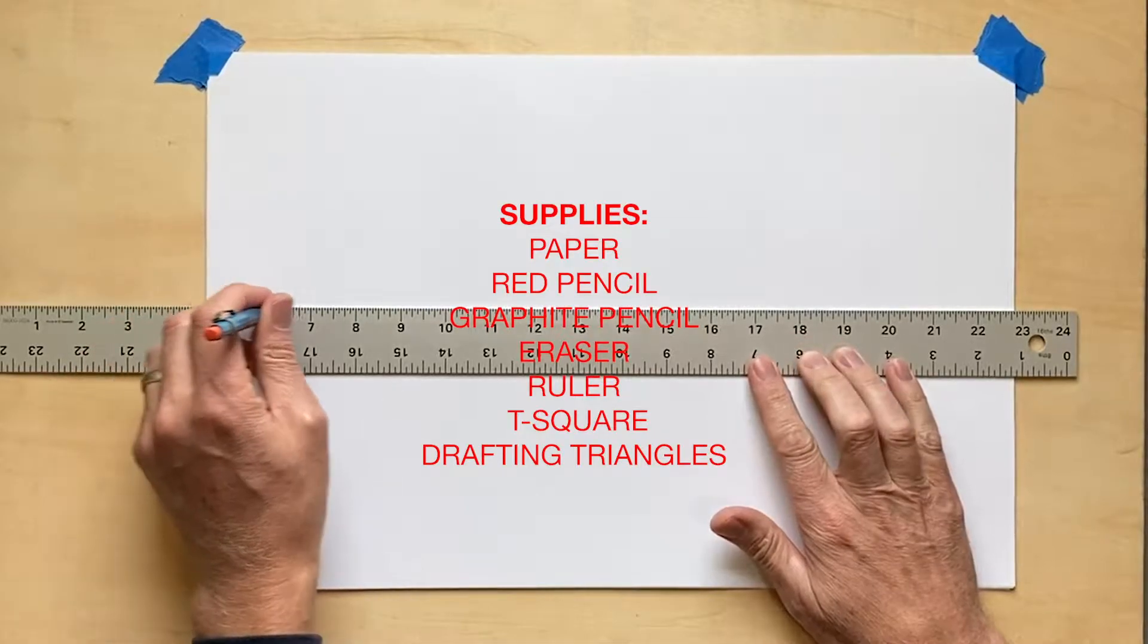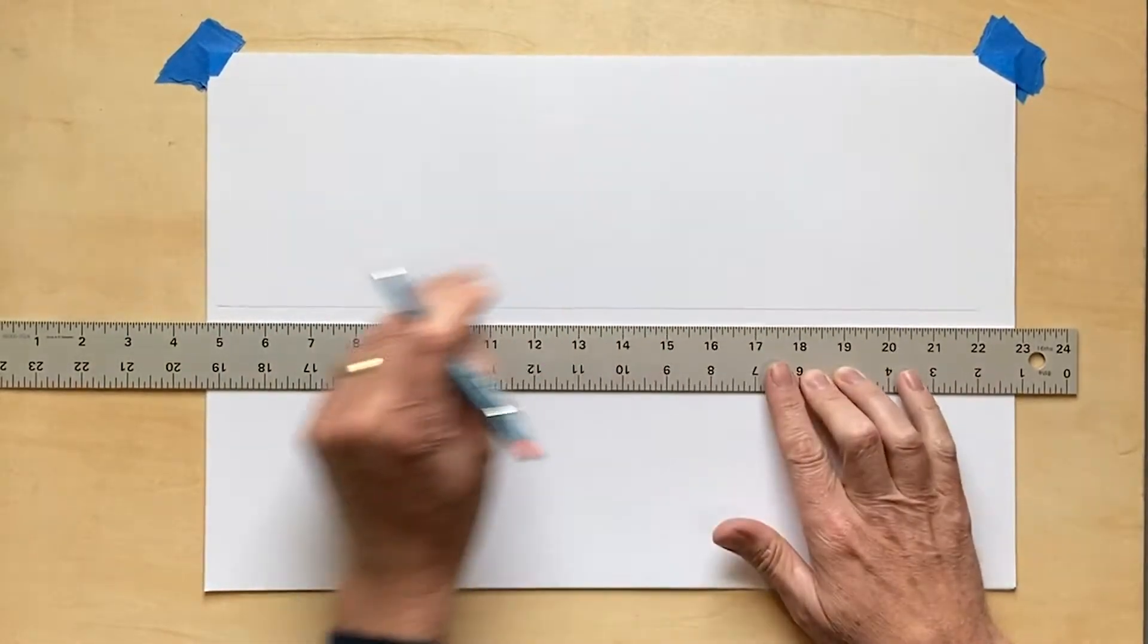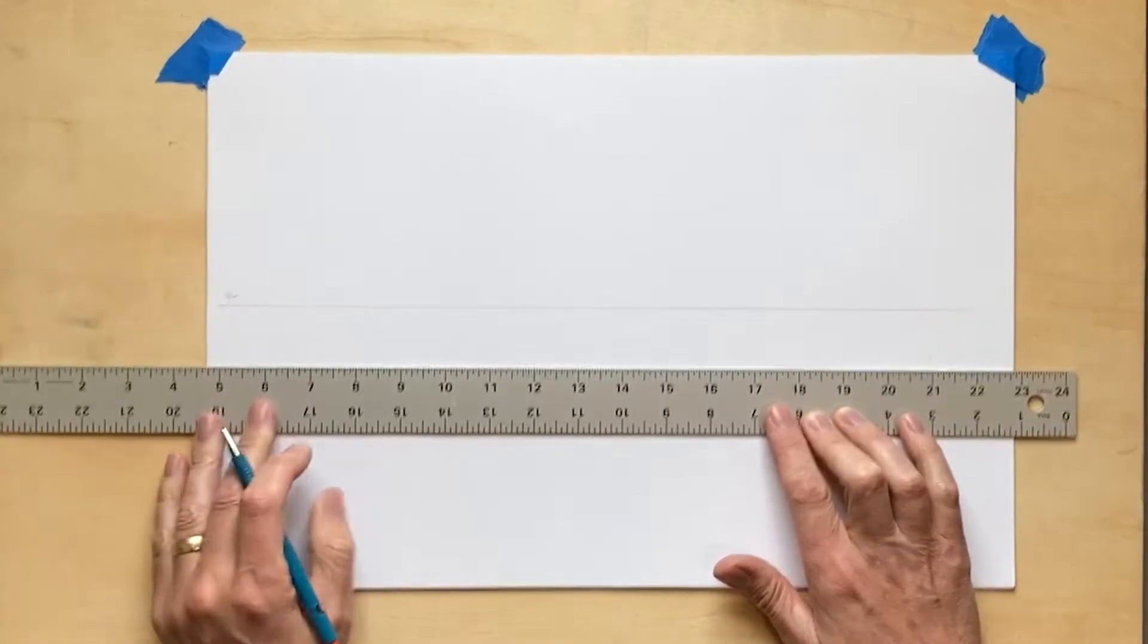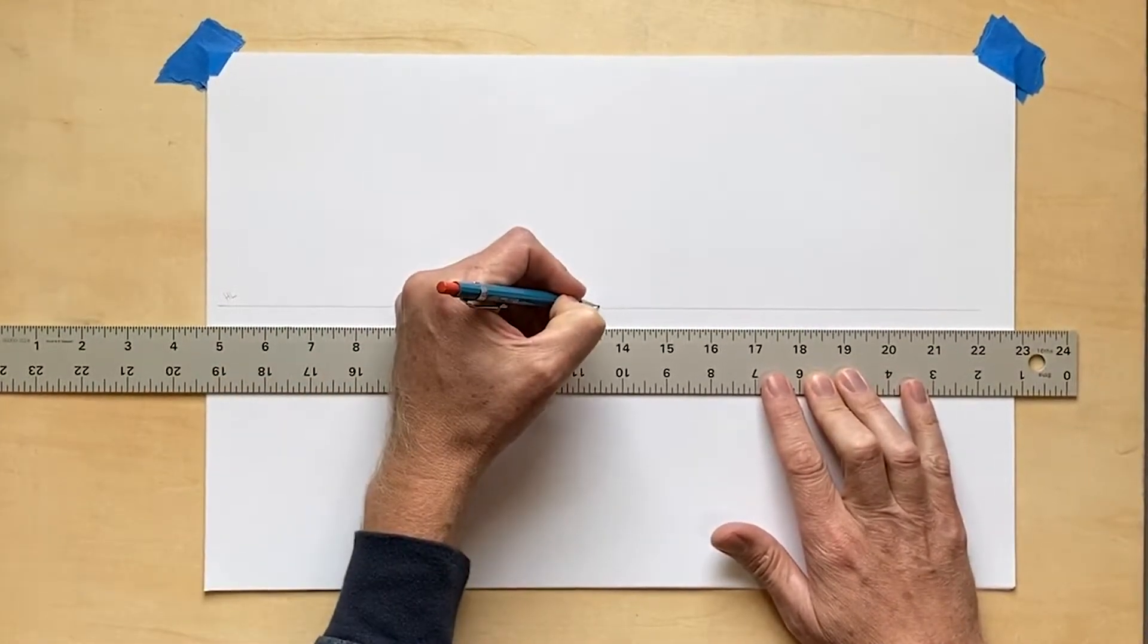Now, as with every perspective drawing, we first want to establish the horizon line, so I draw a horizontal line across the paper and mark it HL for identification purposes.